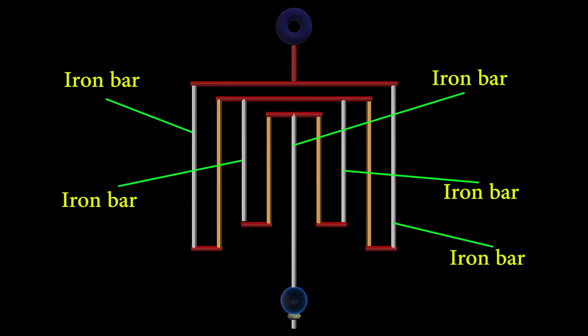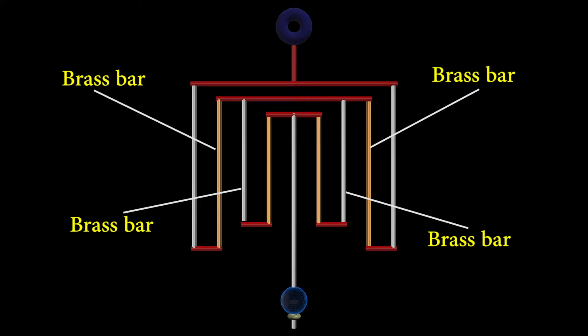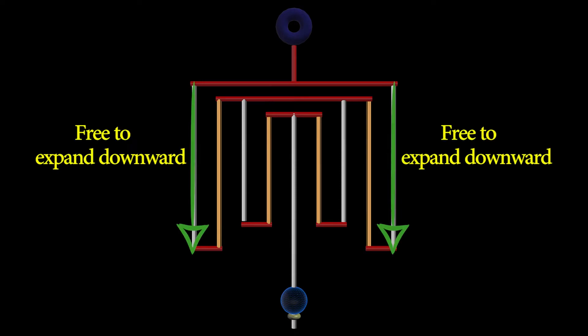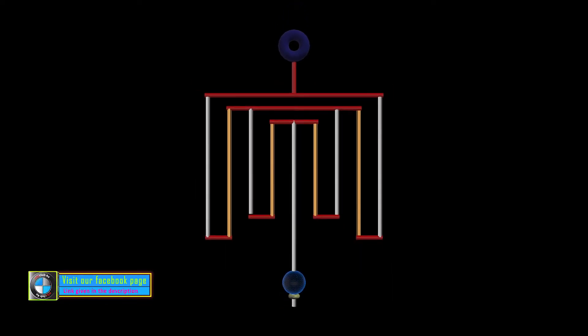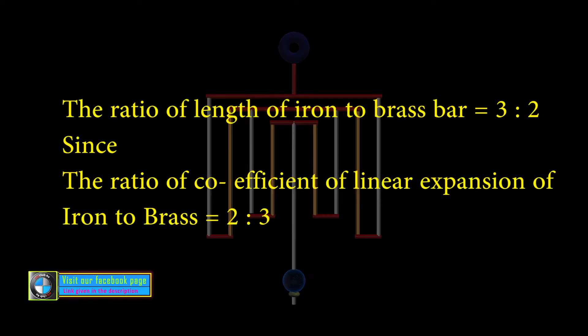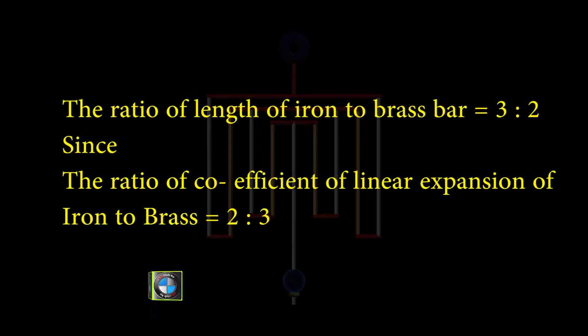It has 5 iron and 4 brass bars connected with each other in such a pattern that, if the iron bars have free expansion in downward direction, then the brass bars have free expansion in upward direction. The ratio of length of iron bars to the brass bar is kept 3 is to 2.